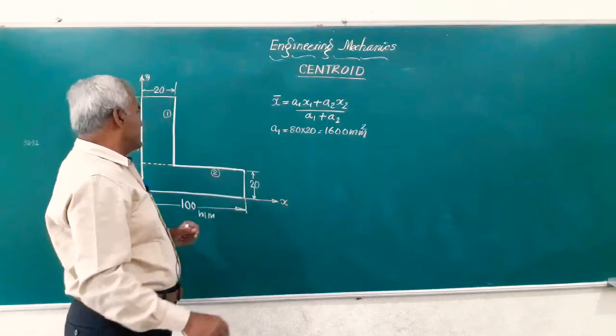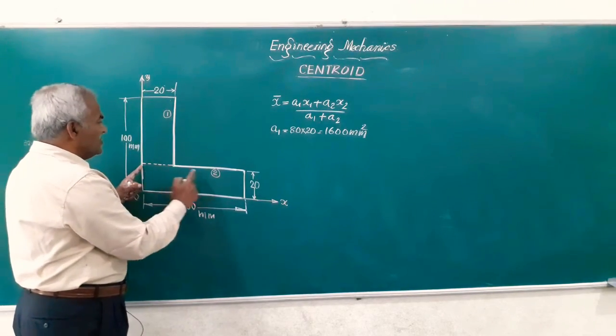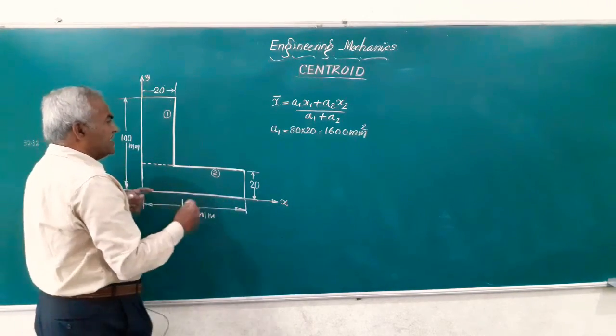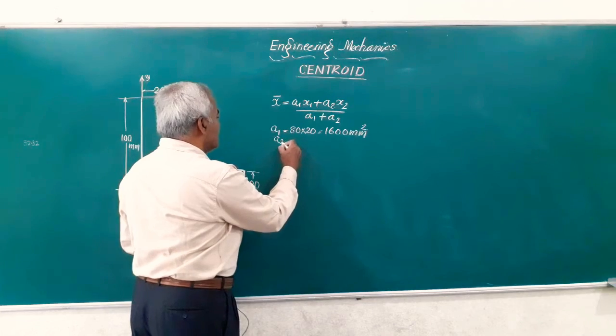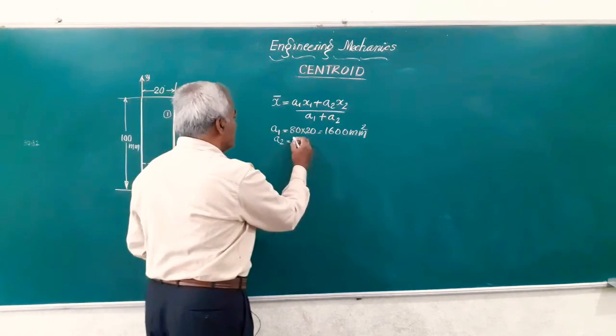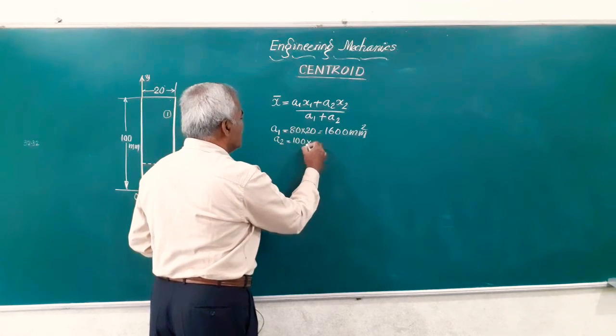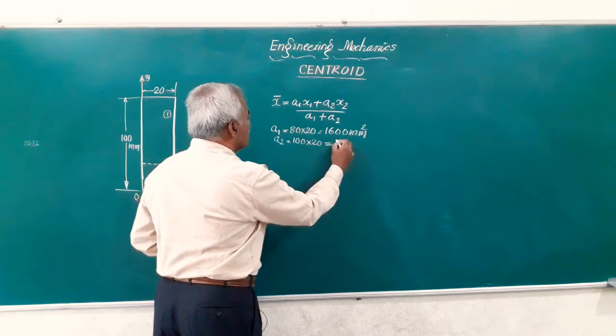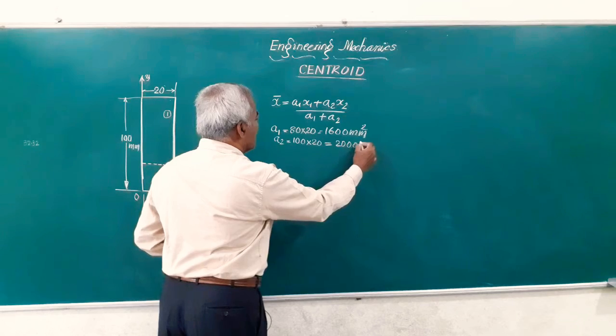Likewise friends, a2 is the area of this rectangle so a2 is given by the length into width 100 into 20, you can say 100 into 20 and this works out to 2000 mm square.